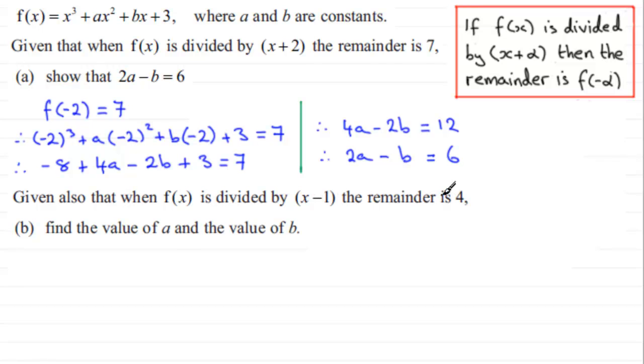f of 1 gives us 4, so therefore we have f of 1 equals 4. Substitute 1 throughout f of x here and you've got 1 cubed which we know is 1, plus 1 squared times a is just going to give me a, plus b times 1 which is b, plus the 3, equals our remainder here of 4.